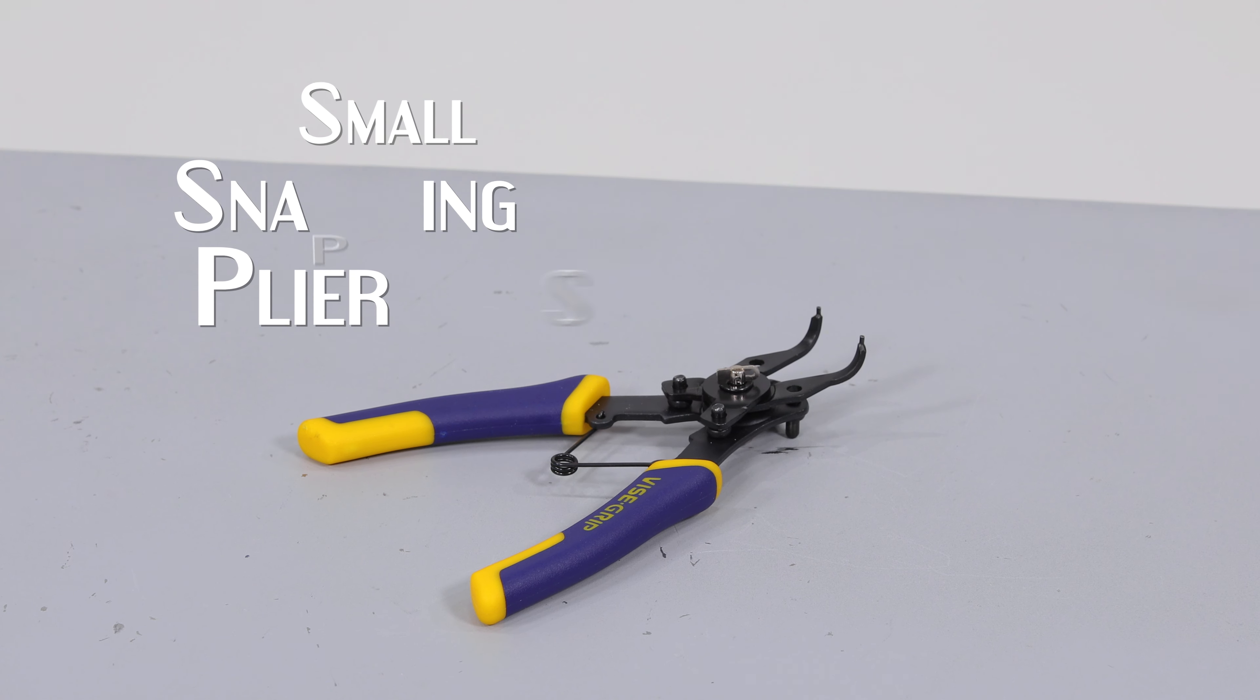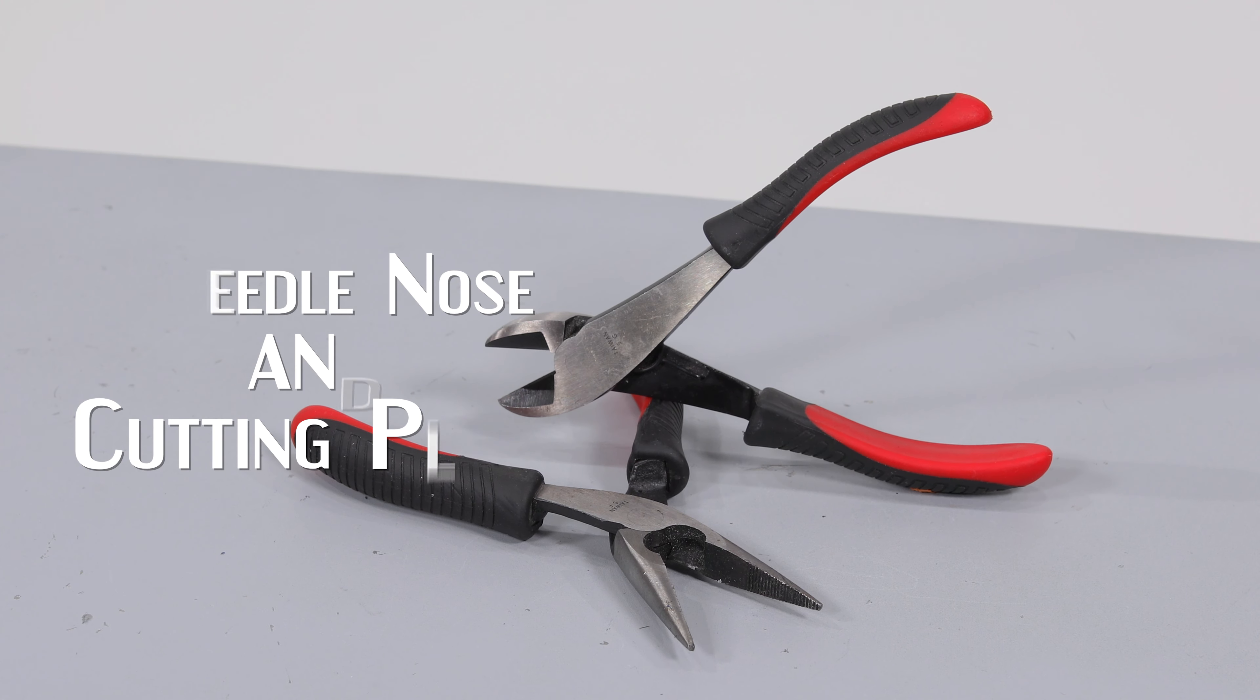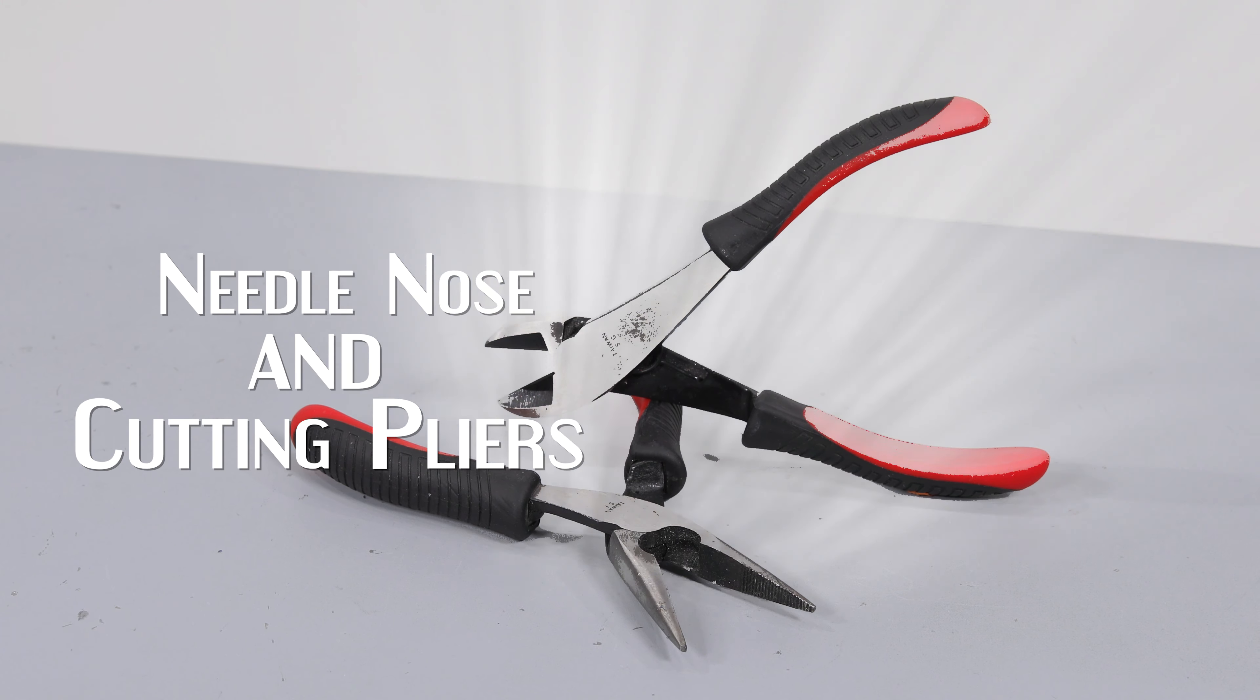Small snap ring pliers, needle nose and cutting pliers, a vise mounted to a table or stand, and an arbor or hydraulic press.